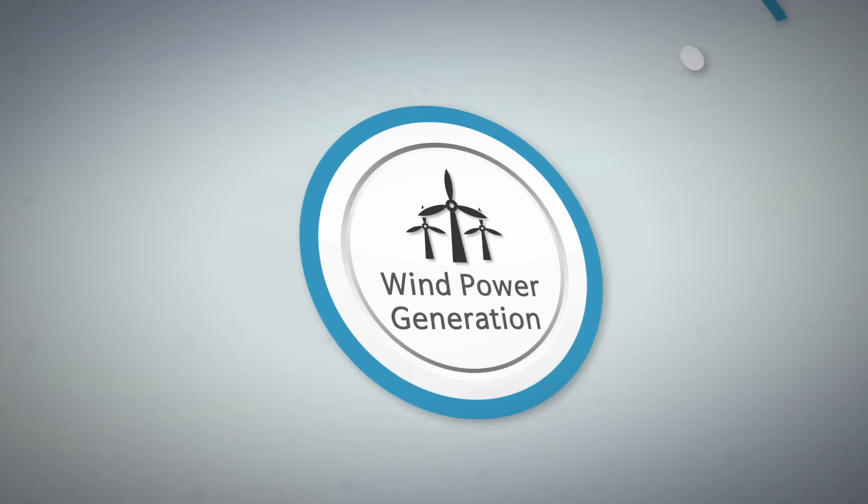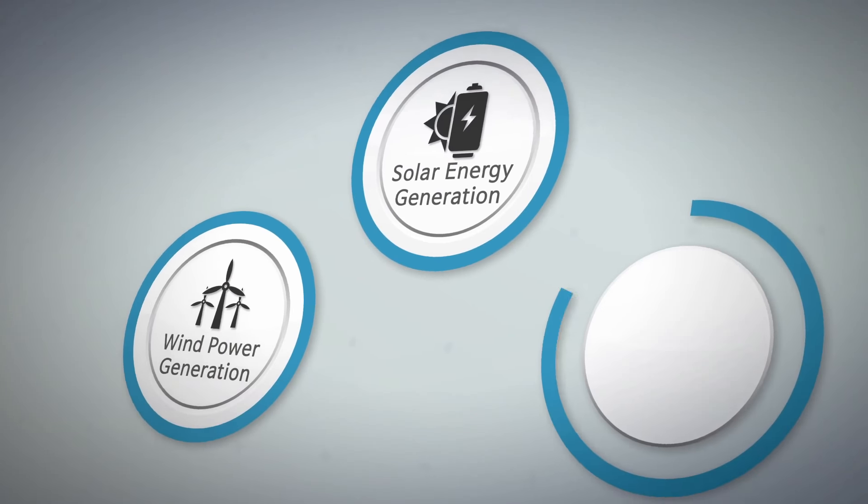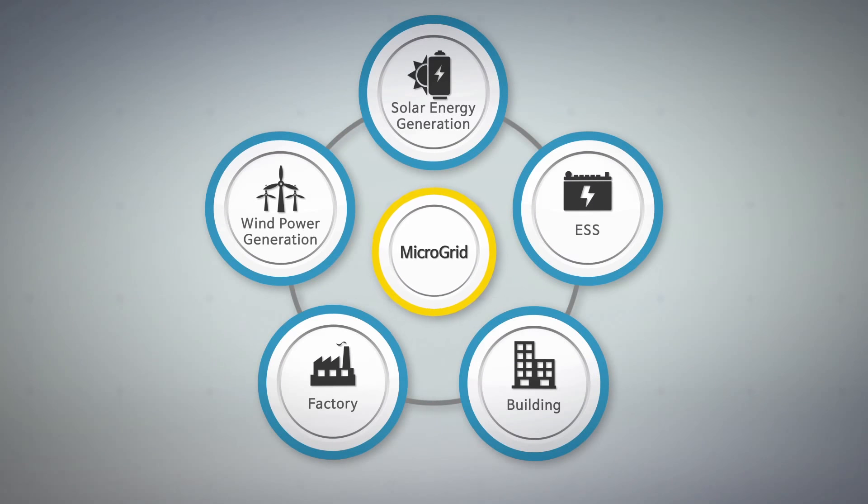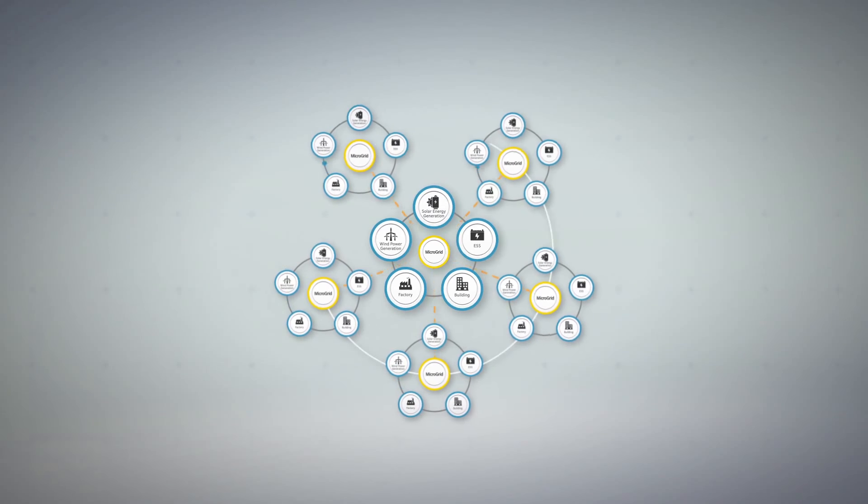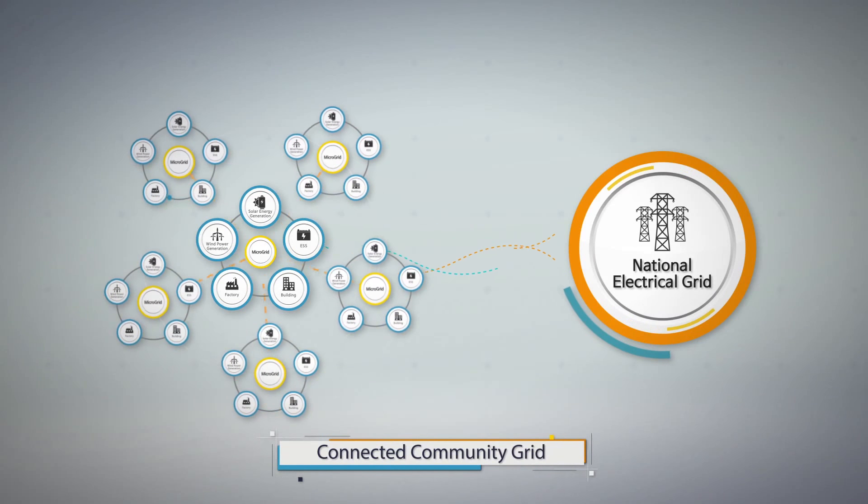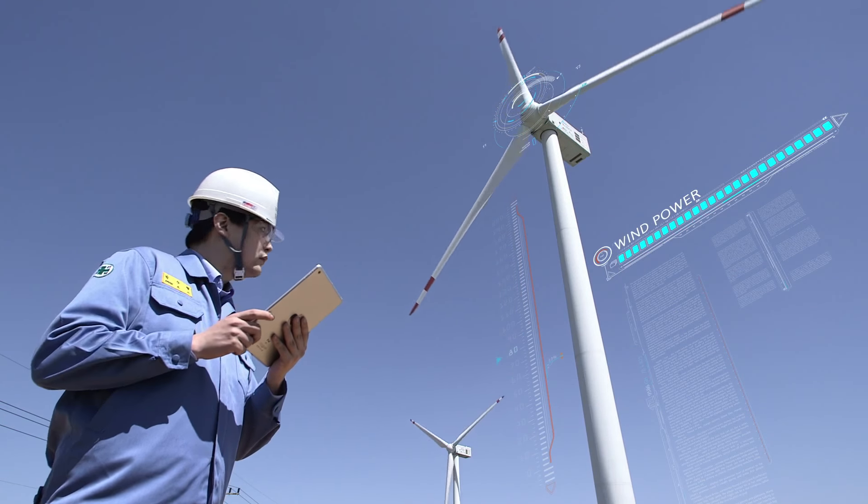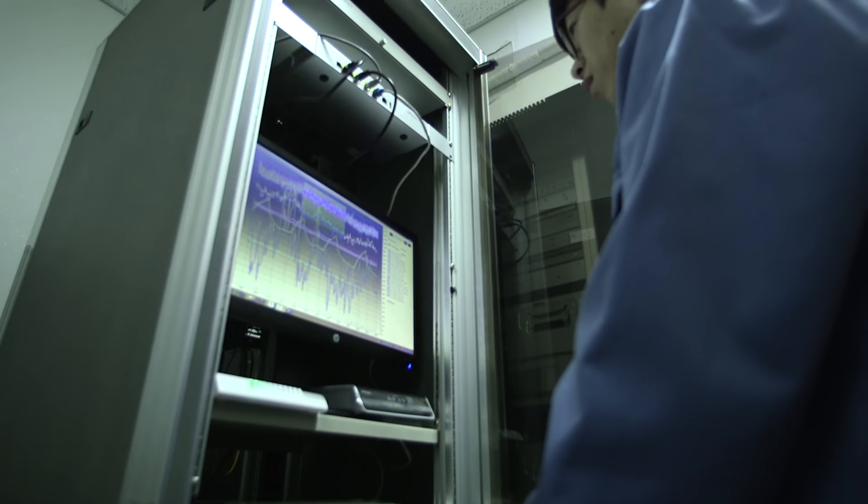It constructs microgrid that produces power for renewable energy generation and stores such in ESS for the independent use of power. Furthermore, it predicts energy demand precisely for the effective use of energy by realizing expanding CCG.